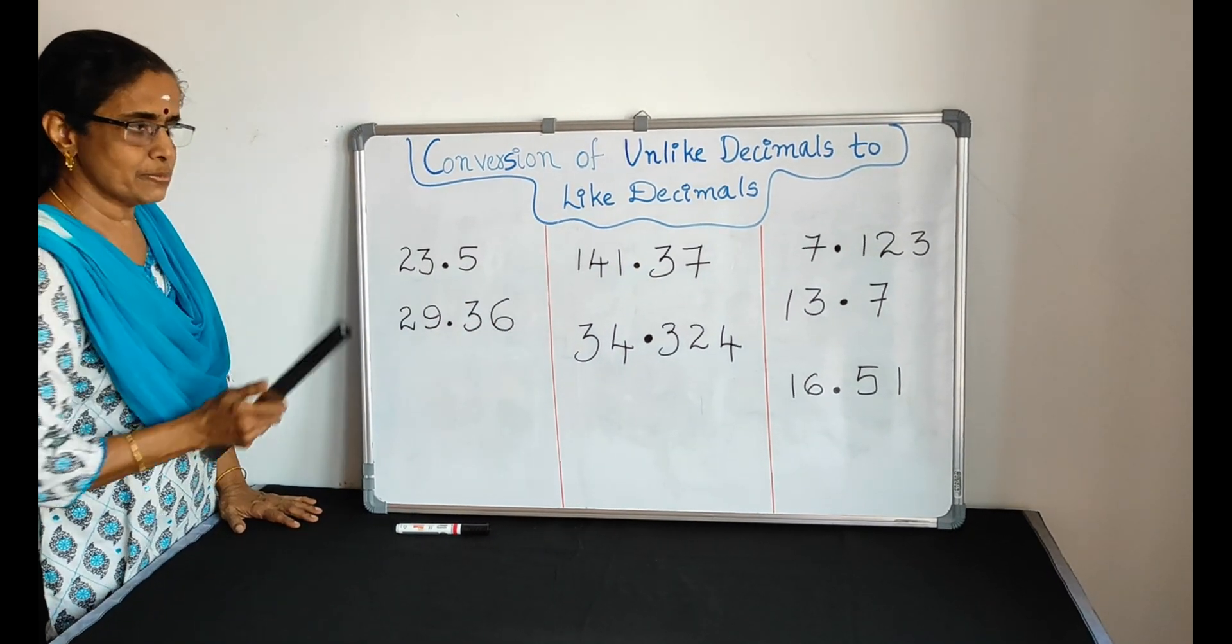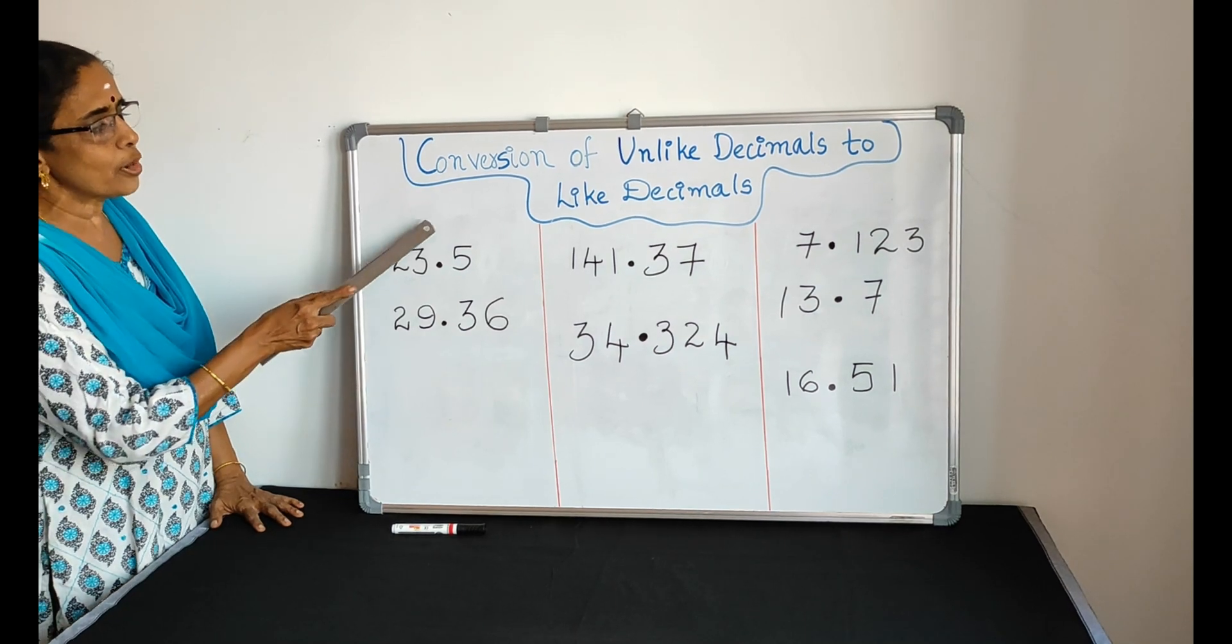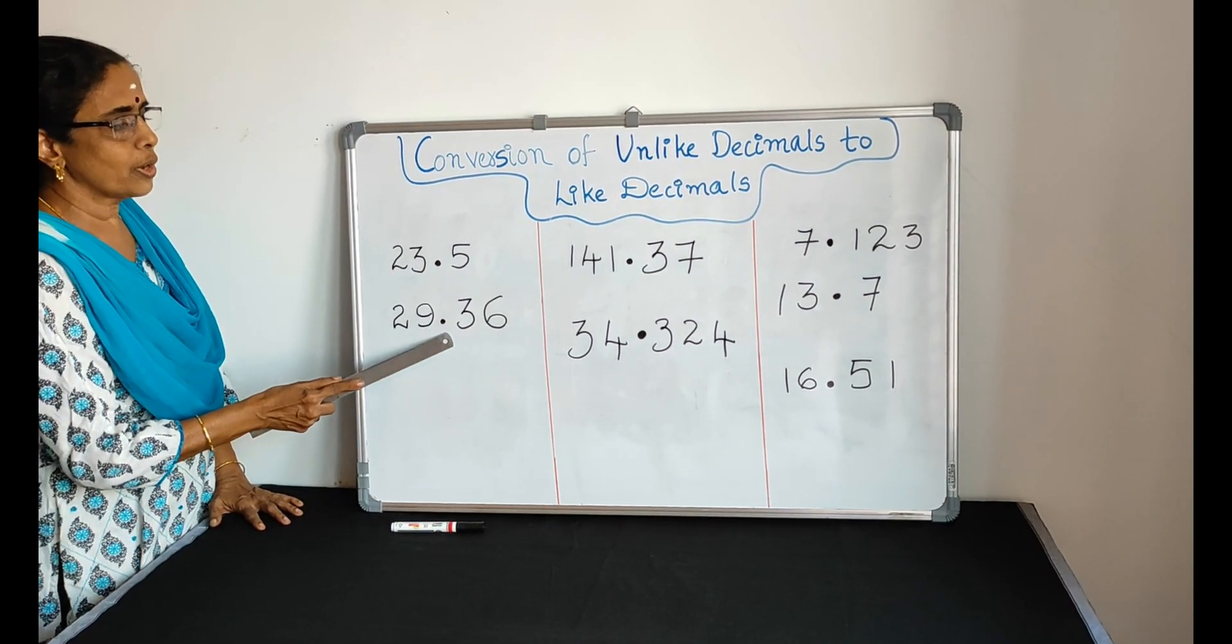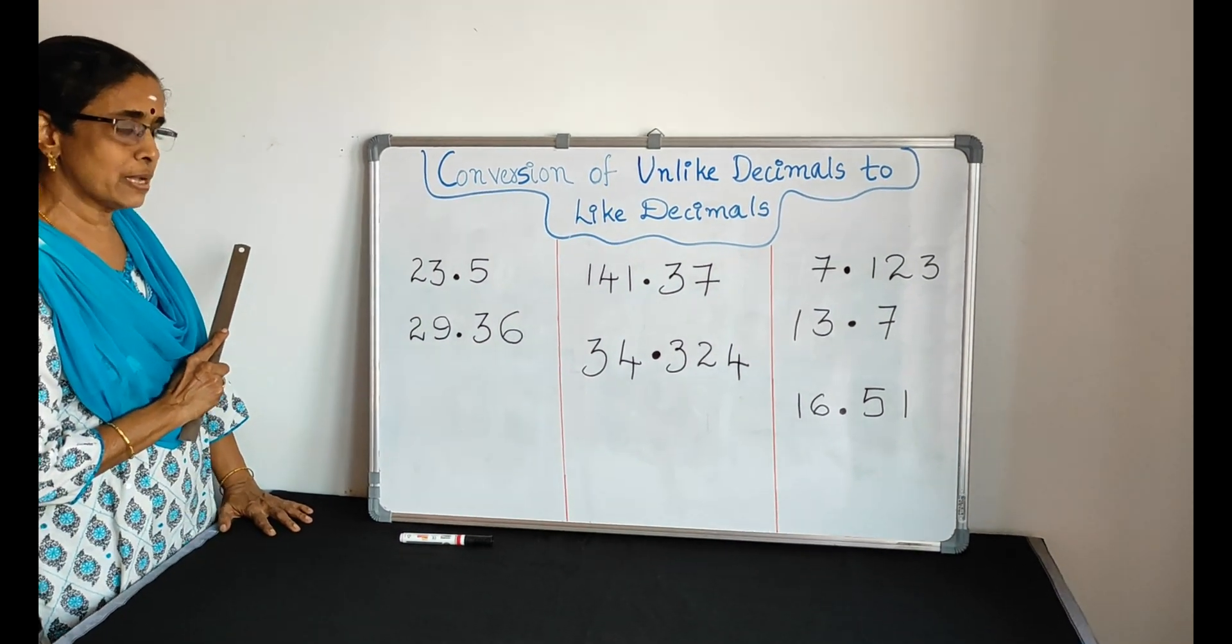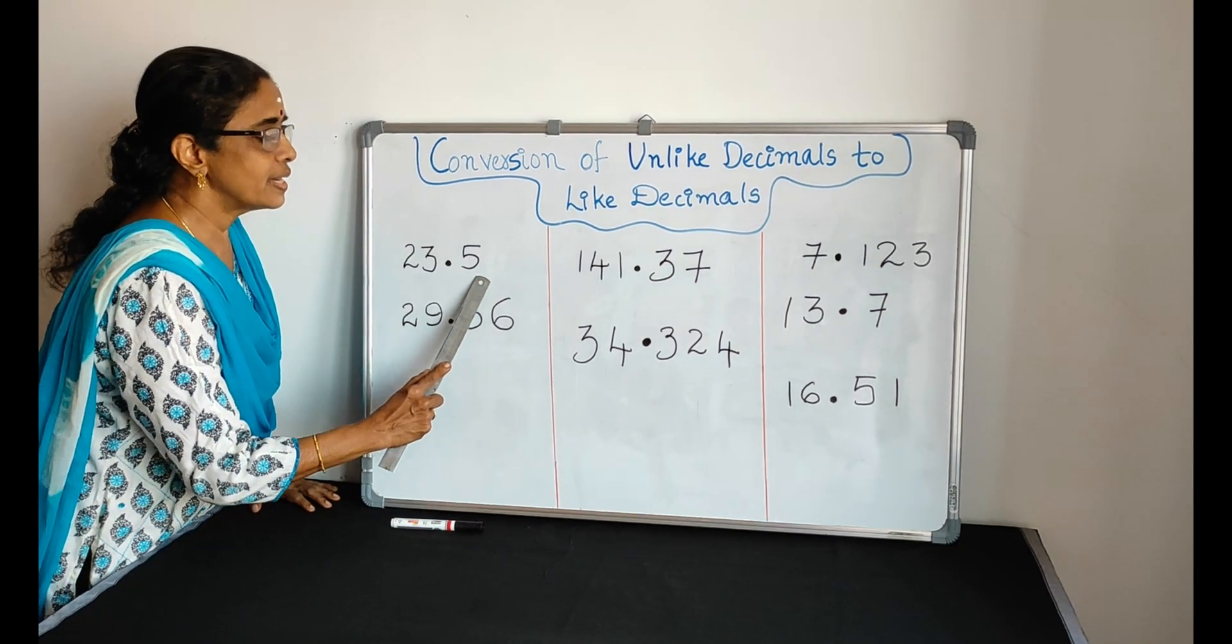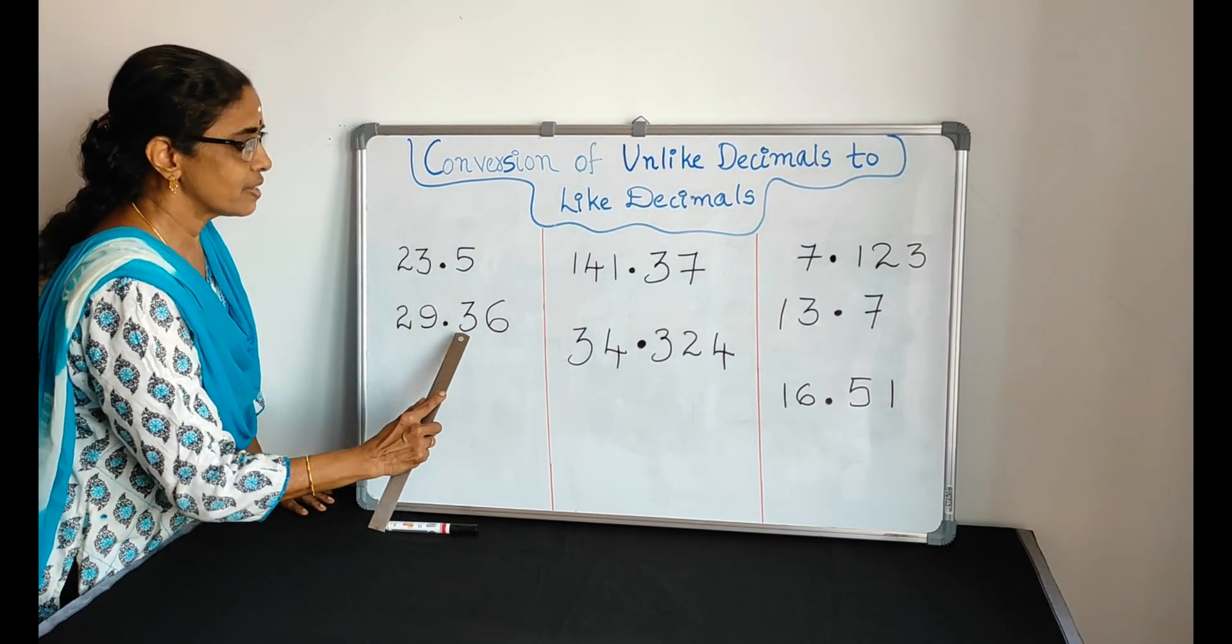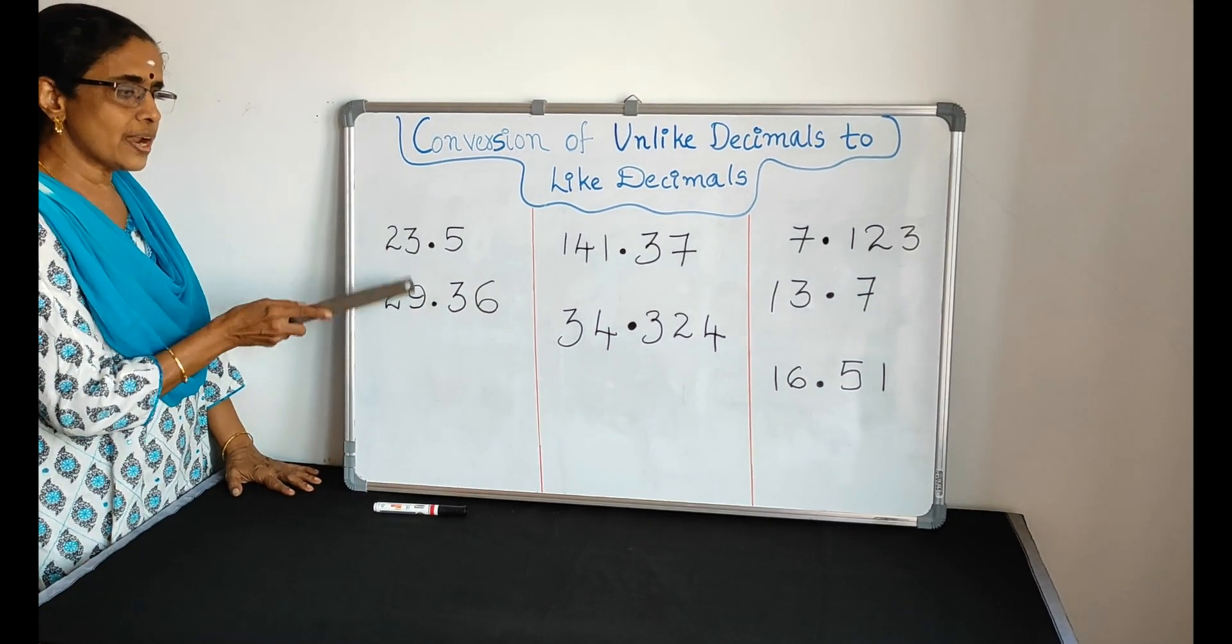Here we have the first two questions: 23.5 and 29.36. These are unlike decimals. Why are they unlike decimals? Here we have only one digit after the decimal point. Here we have two digits after the decimal point. So they are unlike.